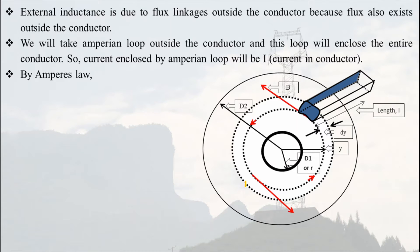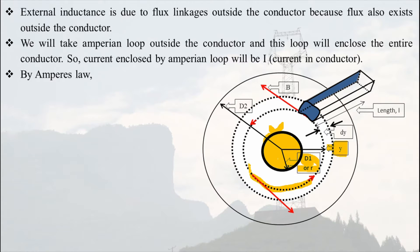Suppose this is the conductor carrying current i in a direction coming out of your screen — this is the cross-section of the conductor. We assume the Amperian loop outside the conductor: this is radius r of the conductor, and this is the Amperian loop with radius y. You can see that this Amperian loop is outside the conductor and it is enclosing the whole conductor.